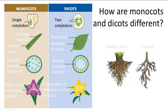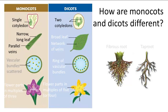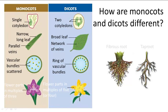In a quick comparison of monocots and dicots, we also find that monocots tend to have long narrow leaves with parallel veins and scattered vascular tissue, whereas dicots have broad leaves with branching veins and vascular tissue in the arrangement of rings.